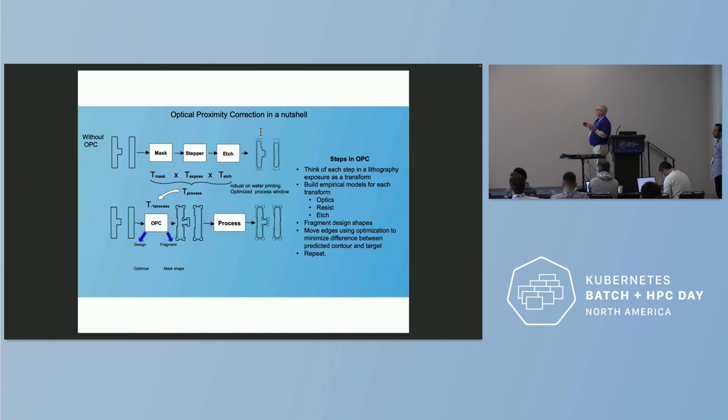And then we finally do optical proximity correction, and we also verify that the shape that we've created will actually print on wafer using modeling to within a certain tolerance or expected variance. So, in a nutshell, what is optical proximity correction? You can think about this as an optimization problem. Prior to about the 90 nanometer technology node, you could actually take a drawn shape, multiply it by a scaling factor, and transfer it to a lithography mask, and you'd have a pretty good probability of hitting the target for the design.